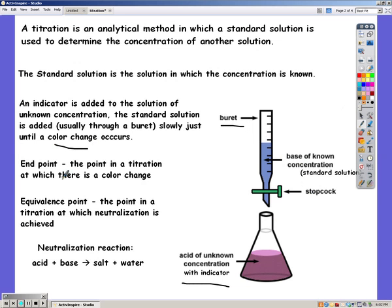The color change indicates the end point, the point in a titration in which there is a color change. The equivalence point is the point in the titration in which neutralization is achieved. Remember that neutralization is when an acid and a base react to produce salt and water.